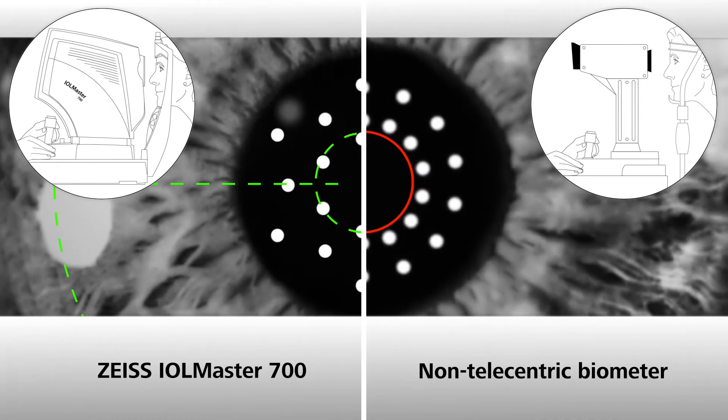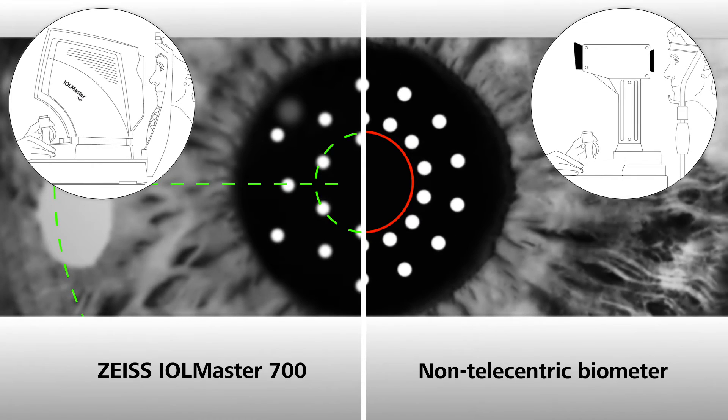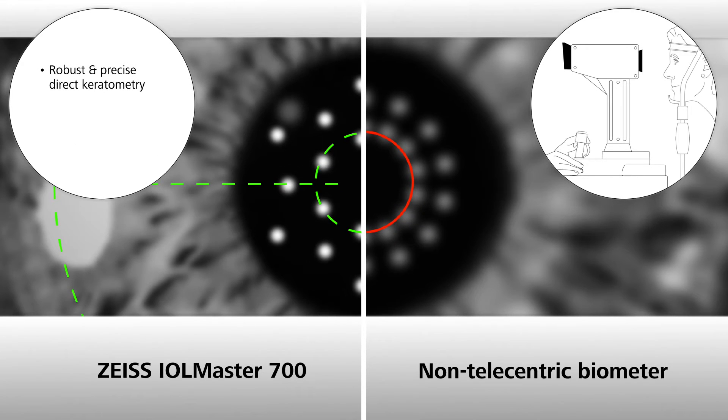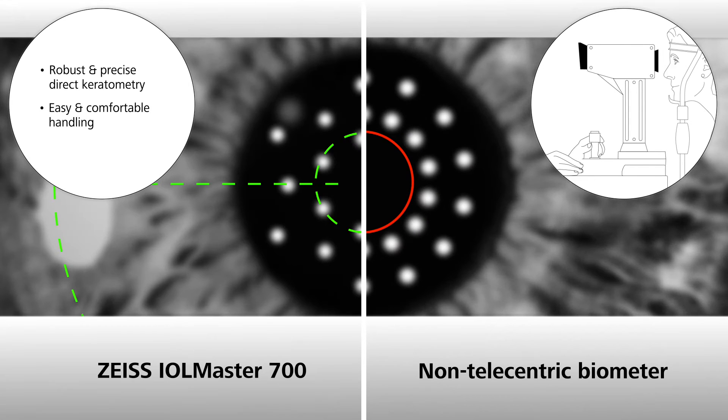In clinical practice you want a system that you can rely on in every situation. With the IOL Master 700, you get robust and precise direct keratometry that is easy to use for keratometry measurements.